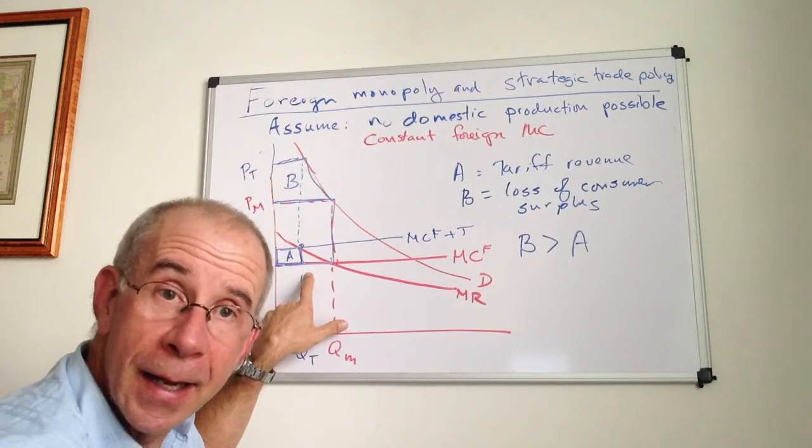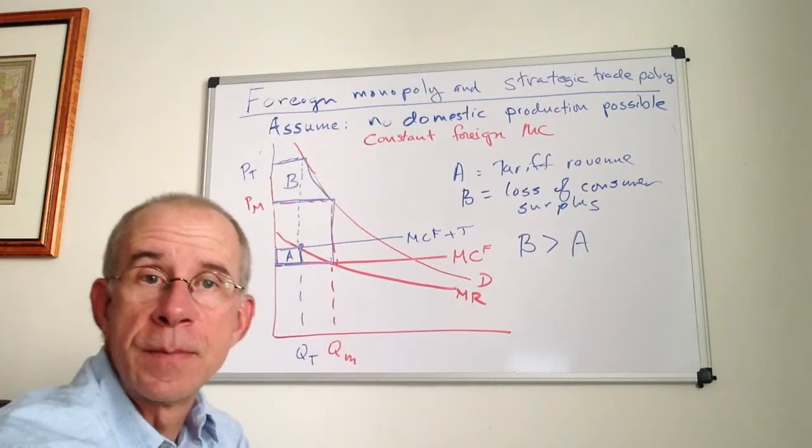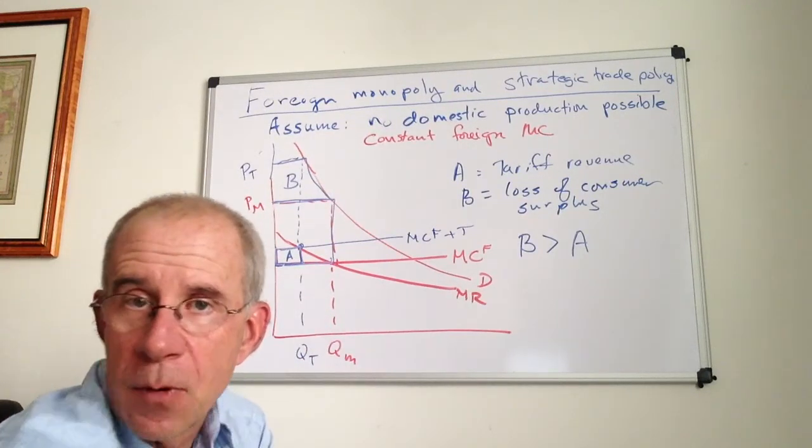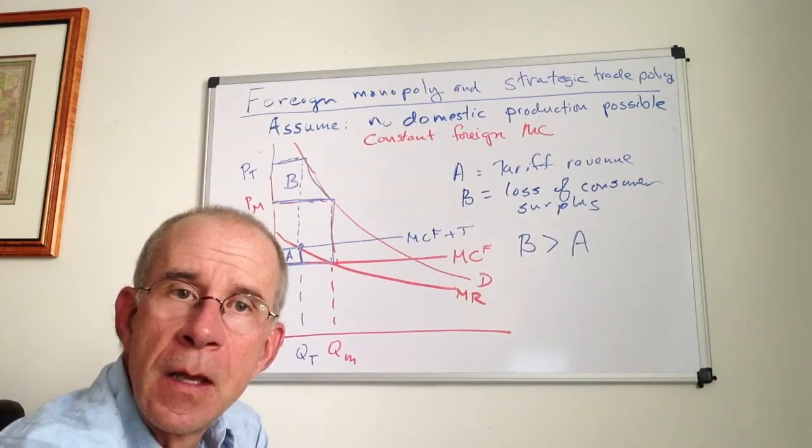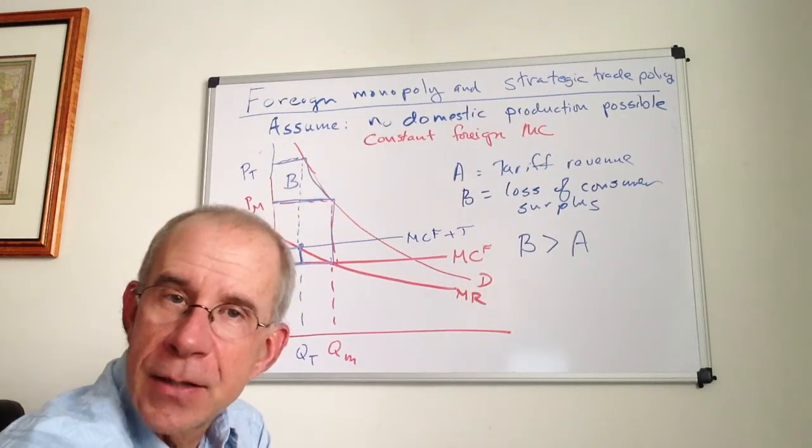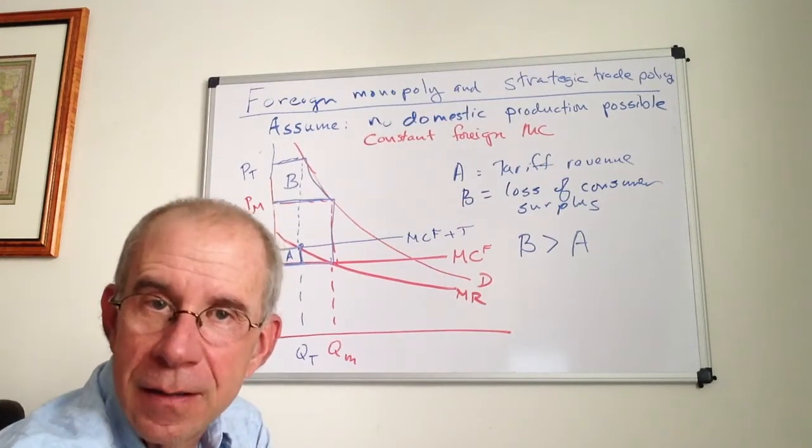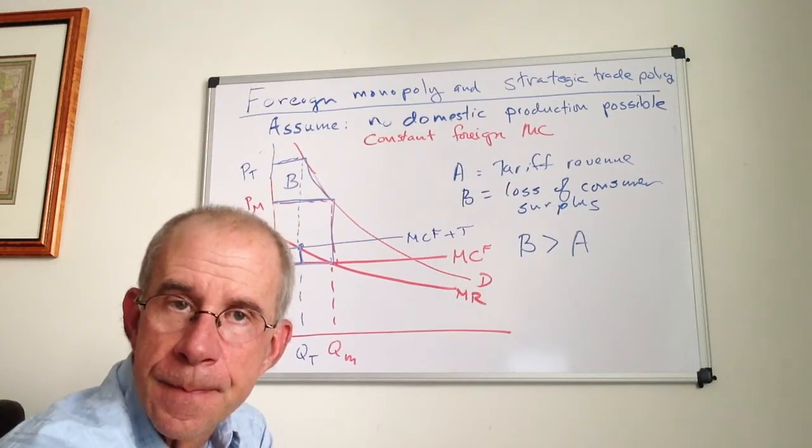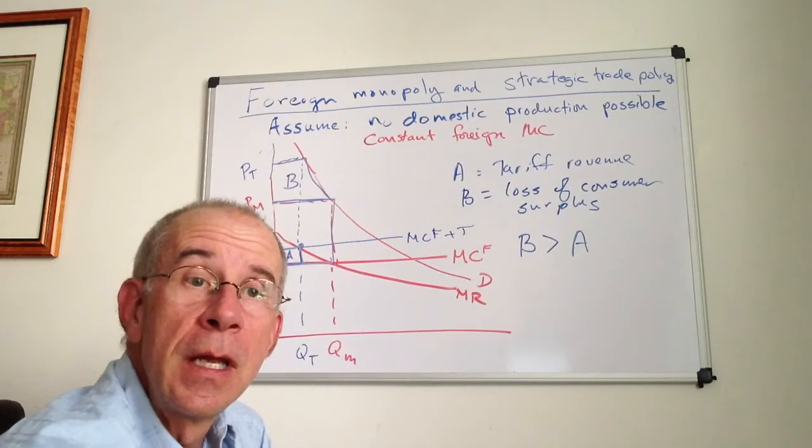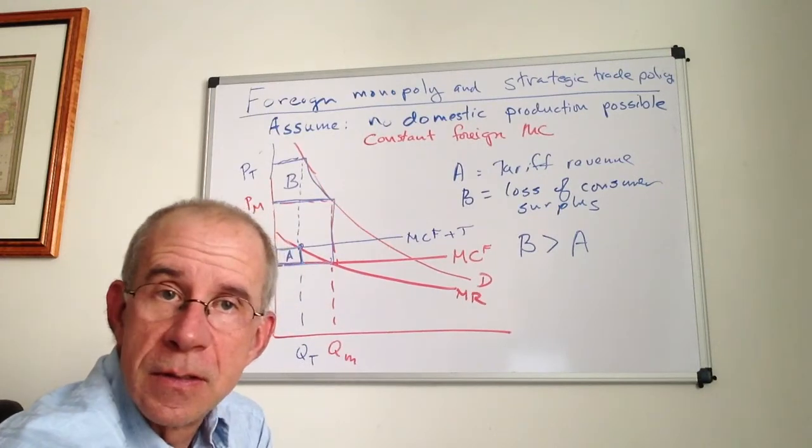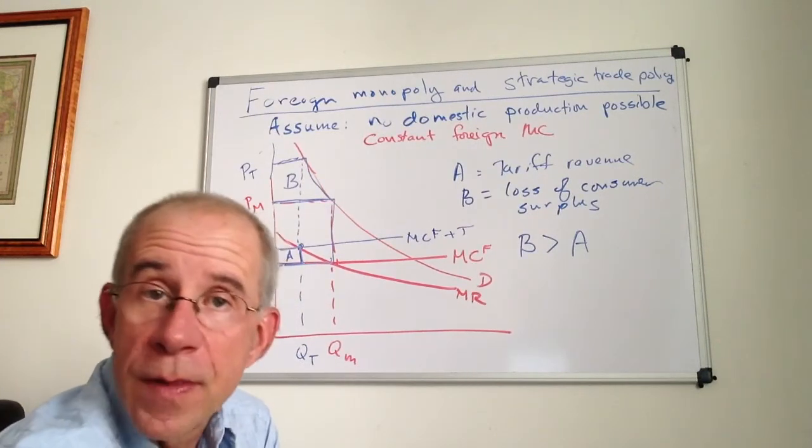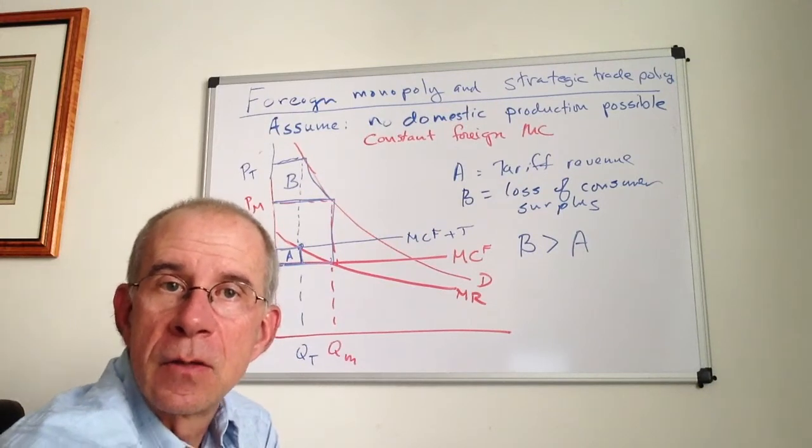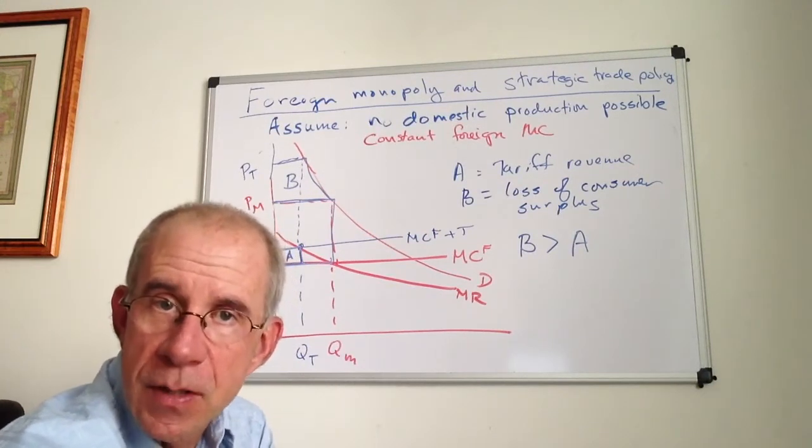In fact, it's going to make sense, and this will be part of a homework, for the government to actually impose a subsidy on the foreign monopolist. We're going to see that the reduction in prices to domestic consumers will more than outweigh the cost to the government of imposing those subsidies.